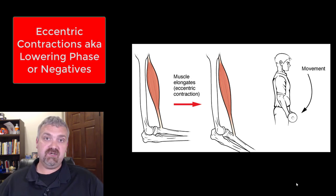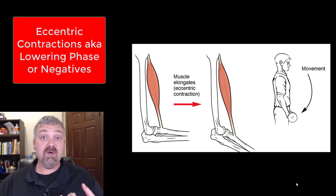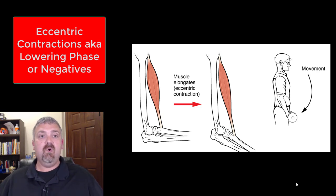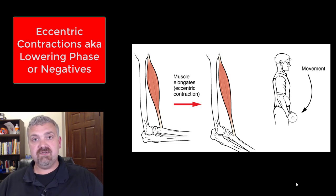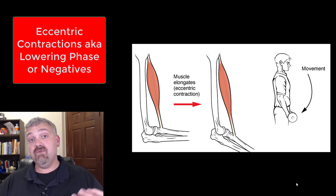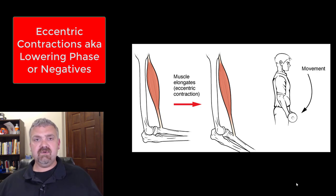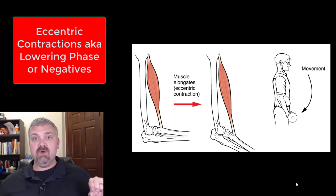The last type is eccentric contractions, where while a muscle is contracting, it's getting longer. This would be called the lowering phase of movement. Notice how this guy in the picture is putting the weight down, lowering the weight back to his side. Or if you're doing pushups, as you lower yourself to the floor, that would be an eccentric contraction. This is also called negative. If you want to use negative or eccentric contractions when lifting weights, you might have spotters that actually help you lift the weight and you just lower it on your own.